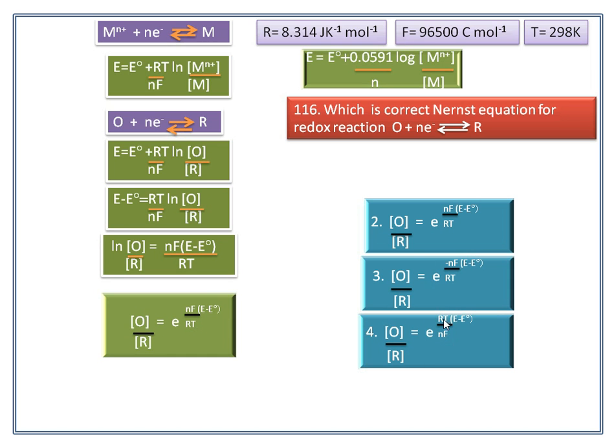And fourth option nF and RT values are inverted. So the second option having the similar Nernst equation for this equation. So second option is the correct answer.